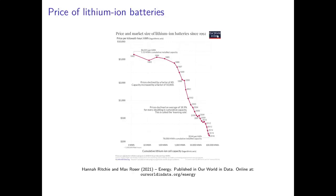A remarkable achievement is the decrease in the price of lithium-ion batteries since 1992, where the price was $5,000 per kilowatt-hour storage capacity. It decreased only a little at first, but then tremendously in the late 1990s, and nowadays it's about $244 per kilowatt-hour storage capacity. This is of course very important for the whole green transition, battery use in electric cars, and so on — the decrease is really incredible over this short time period.